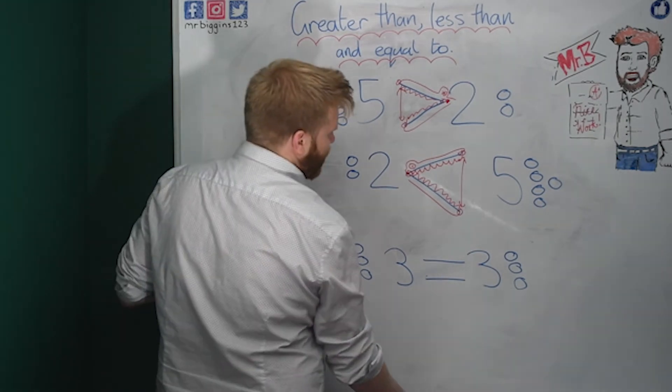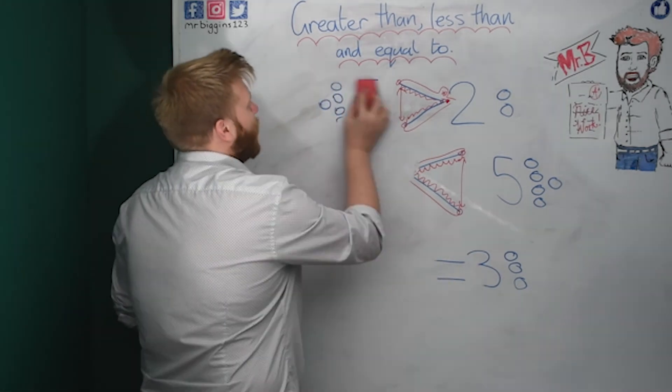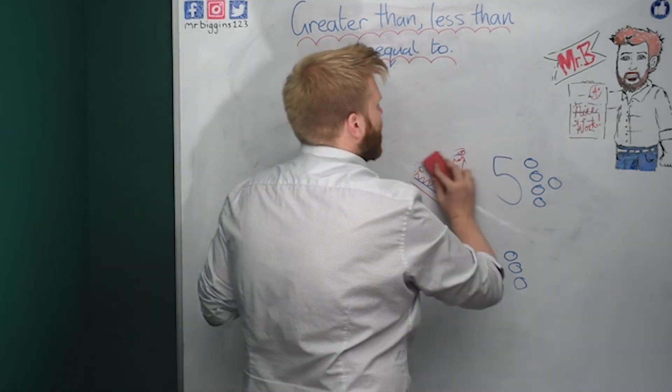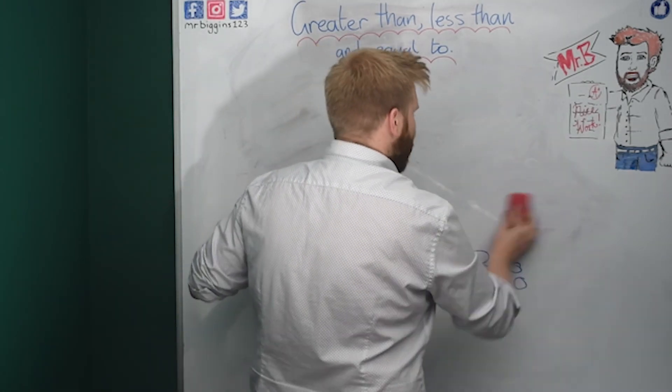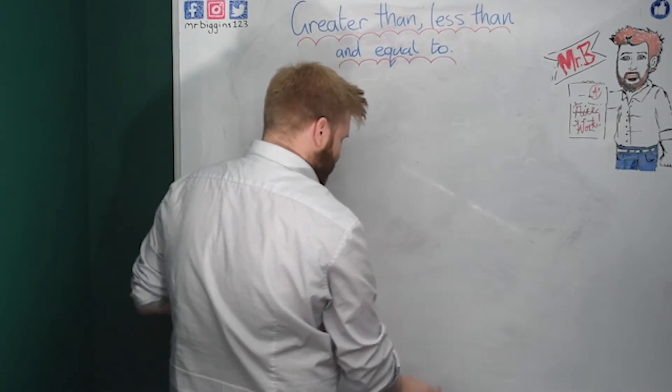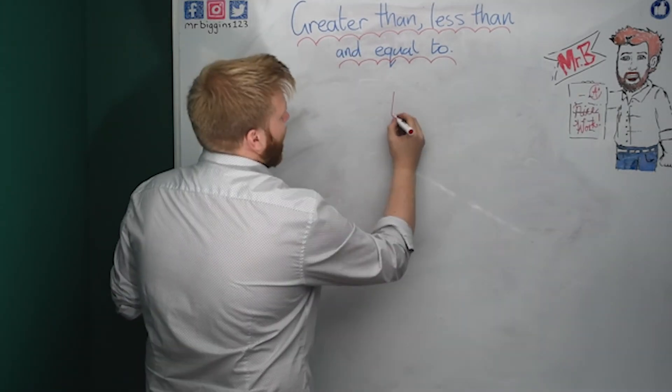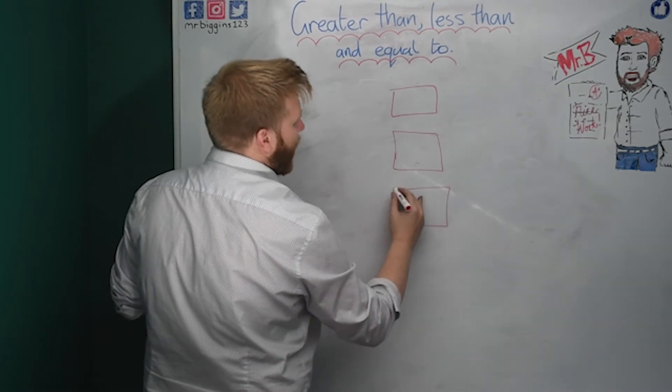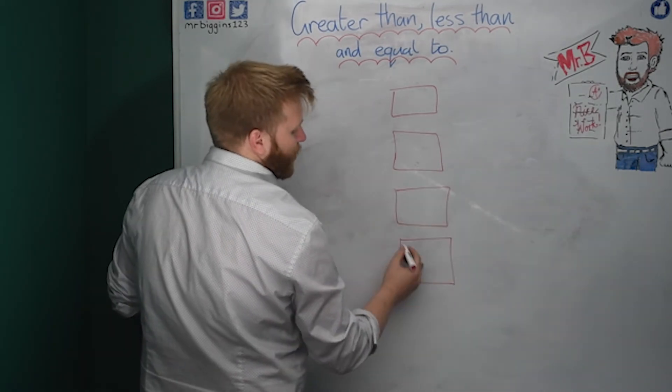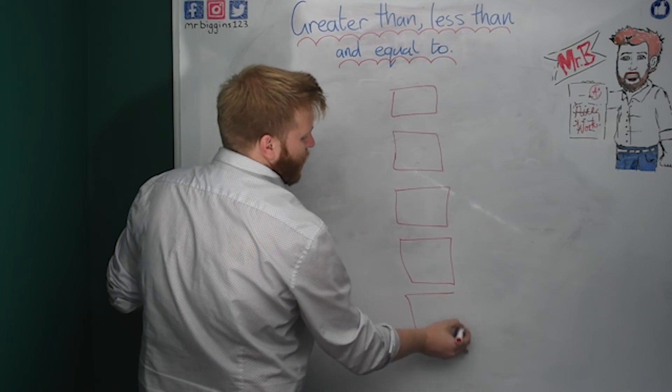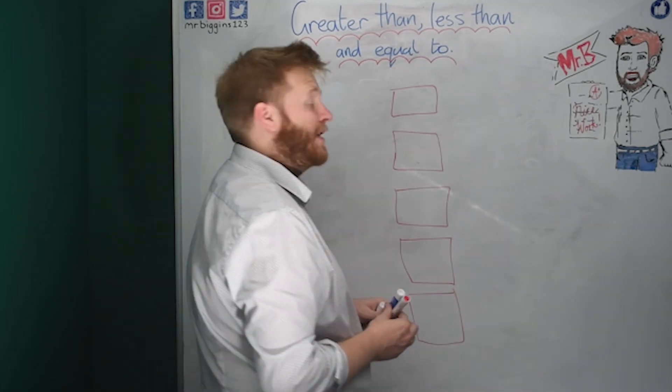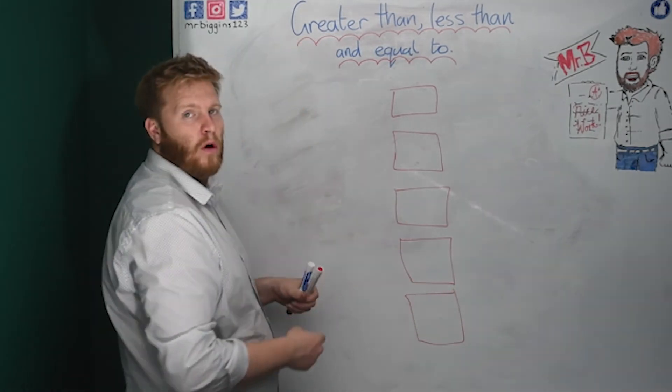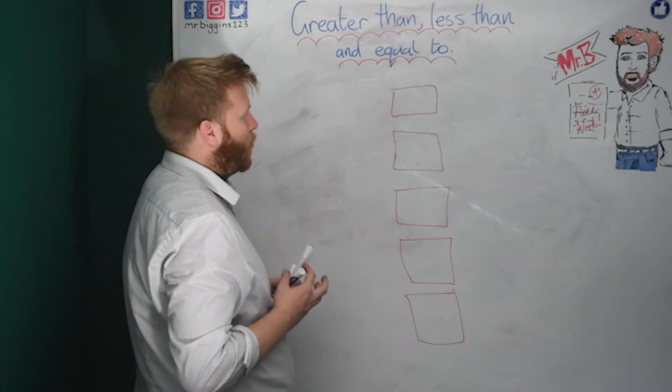So let me put some numbers on the board here. And as I'm doing them, I want you to try and work out which symbol I would put in my boxes here, in the middle. And what I'll do, you can do them as I'm going through. And if you're not quite done by the time we get to the end one, you can pause this for a little bit to have a go.